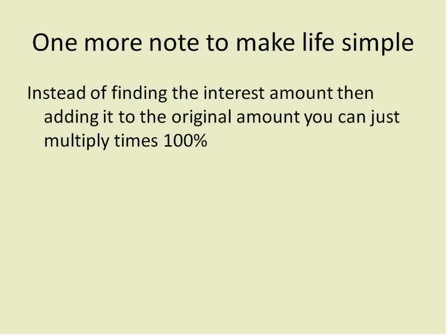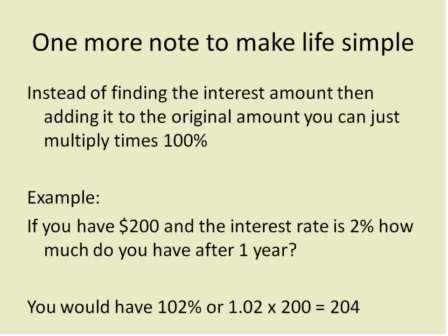One more note to make: instead of finding the interest amount and then adding it to the original amount — like finding $2 on $100 and adding it back — if you just multiply the principal times 100% plus the interest rate, you get the same result. So if you have $200 and the interest rate is 2%, how much would you get after one year? You can use the simple interest equation: $200 times 0.02 times one year gives you $4. Or instead of multiplying by 2%, multiply by 102% or 1.02, and you get the total amount in your bank account directly.